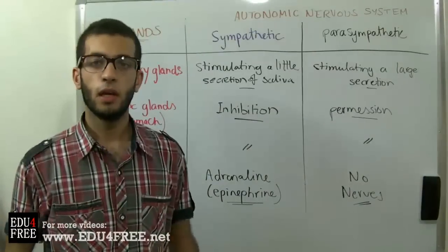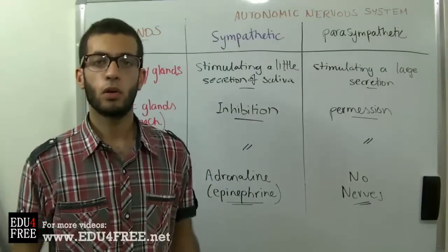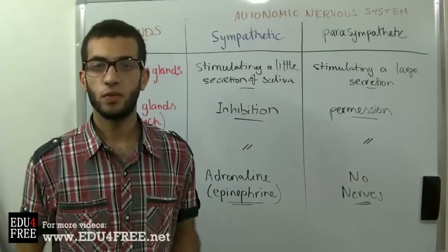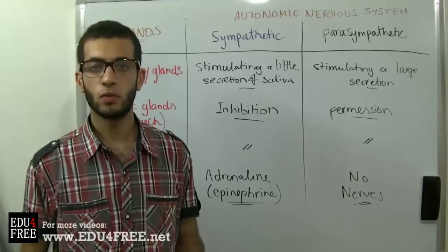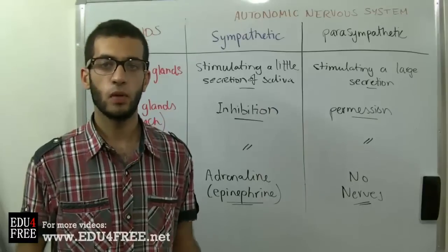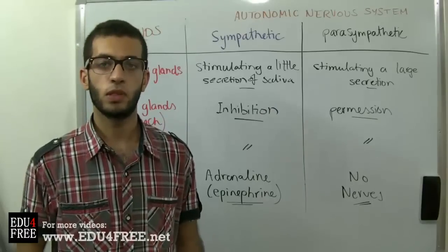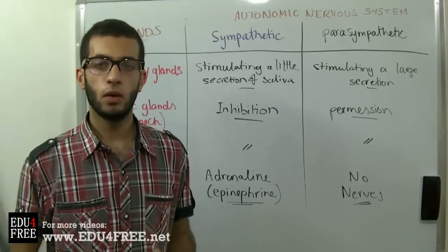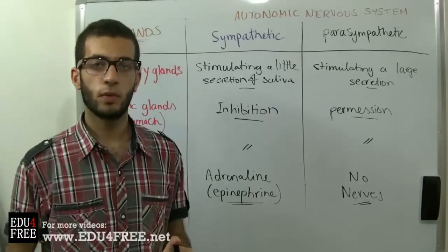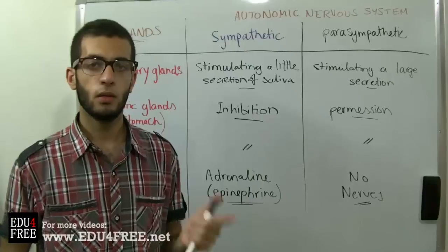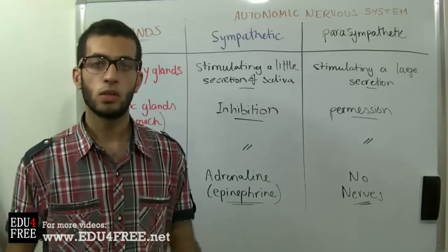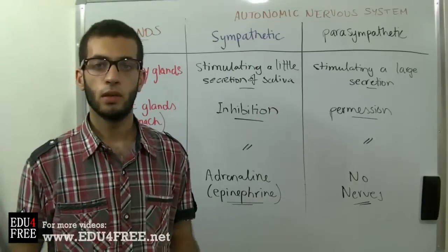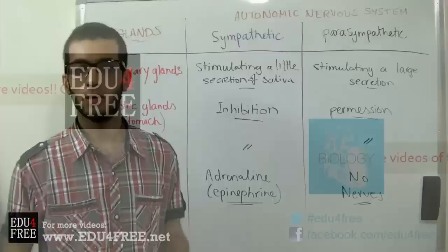That's it for today. Next time we are going to talk about the different types of neuroreceptors — the nerves which receive impulses from different stimuli. That will be the last video in Chapter 5, and then we will begin Chapter 6, which talks about Hormones. Thank you for watching and see you.